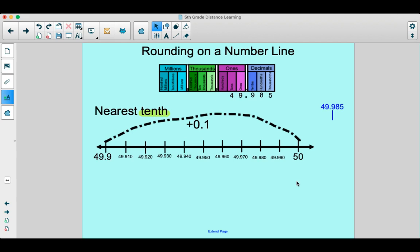All right, hopefully you've unpaused and we're back together. And I want you to think about what's the midpoint on this number line. So the midpoint would be the halfway point between here and here. Well, halfway, just chop it in half. We know the halfway point is going to be 49 and 950 thousandths, otherwise known as 49 and 95 hundredths, right?